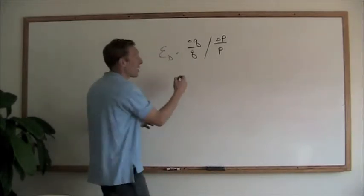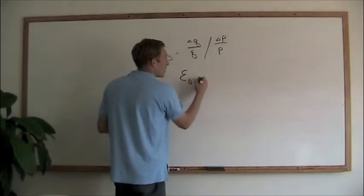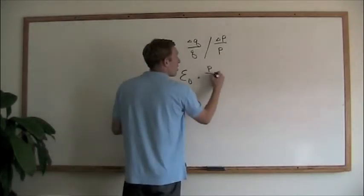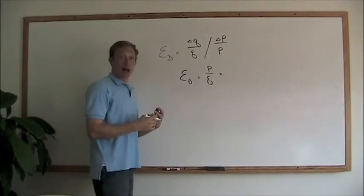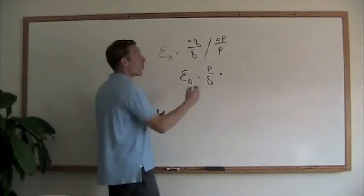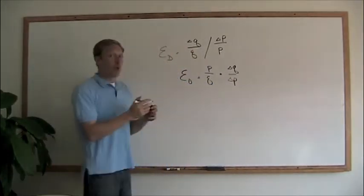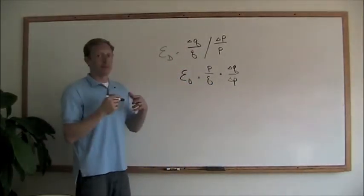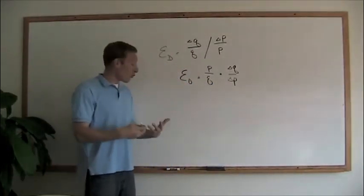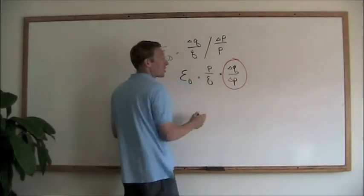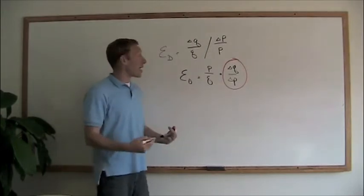Now, we can rewrite that equation to say this: the elasticity of demand is equal to the price over the quantity multiplied by the change in quantity over the change in price. This is important for a really straightforward mathematical reason. This particular part of our equation now is simply the slope of a line.